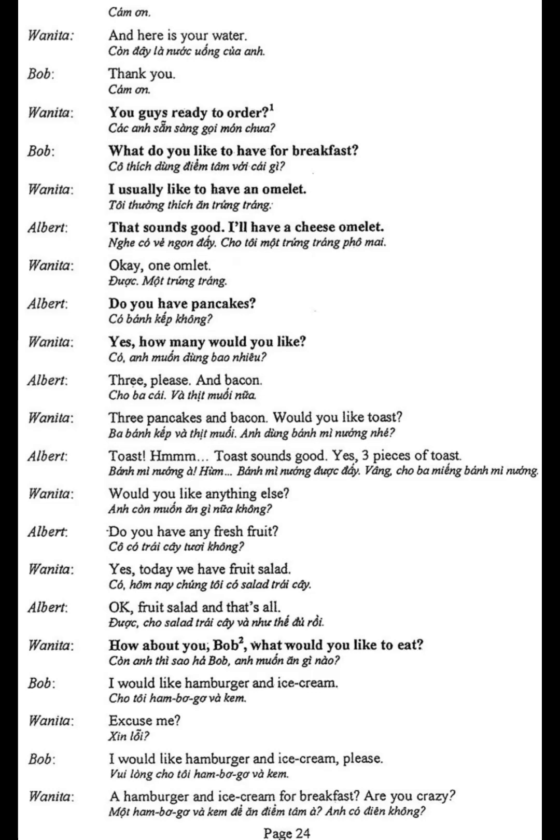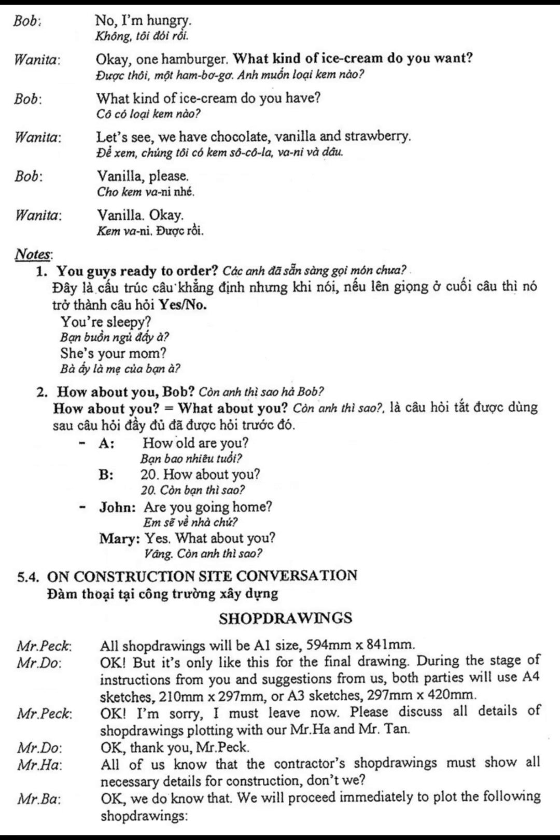How about you, Bob? What would you like to eat? I would like a hamburger and ice cream. Excuse me? I would like a hamburger and ice cream, please. A hamburger and ice cream for breakfast? Are you crazy? No, I'm hungry. Okay, one hamburger. What kind of ice cream do you want? What kind of ice cream do you have? We have chocolate, vanilla, and strawberry. Vanilla, please. Vanilla. Okay.